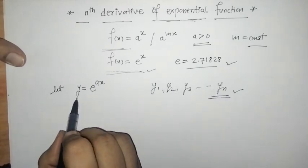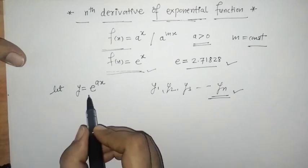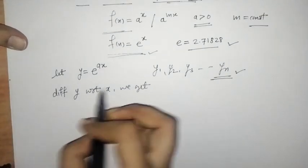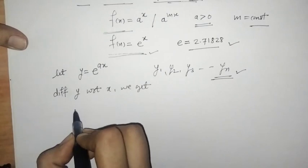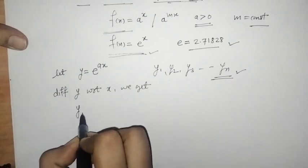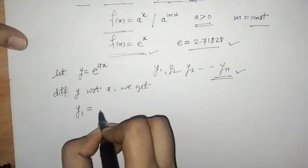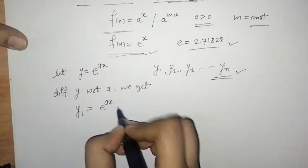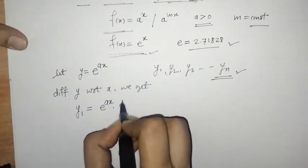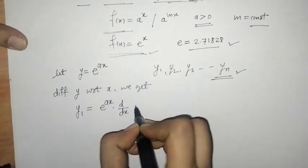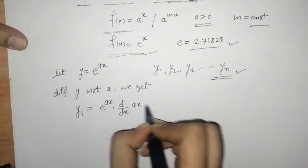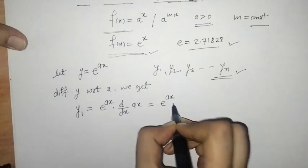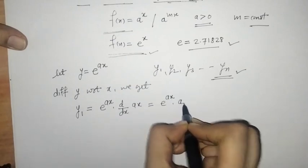We have to differentiate y with respect to x. Differentiating y, we get the first derivative y1, which is given by e raised to ax multiplied by the derivative of ax. So this gives us e raised to ax into a.